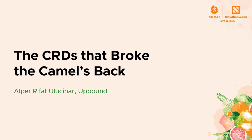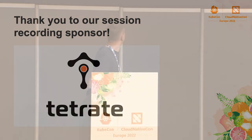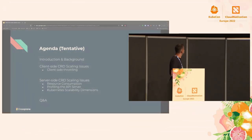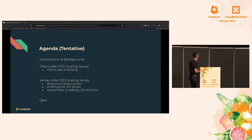Thank you for coming to listen to my presentation. In this talk, I'd like to give a brief introduction of how we encountered these issues. Upbound is one of the main maintainers of the Crossplane project, and I will talk a little about Crossplane and how we hit these issues. I'd also like to briefly mention the client-side CRD scaling issues we encountered, as well as the server-side issues we identified.